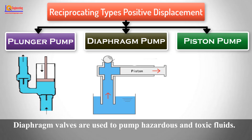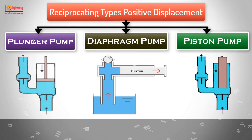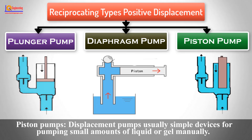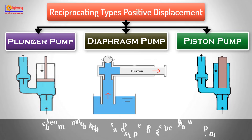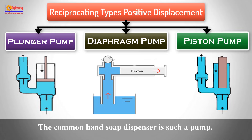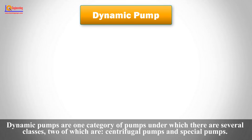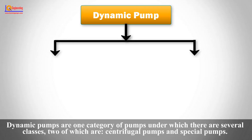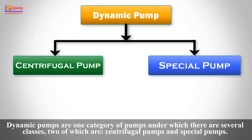Diaphragm valves are used to pump hazardous and toxic fluids. Piston pumps are displacement pumps, usually simple devices for pumping small amounts of liquid or gel manually — the common hand soap dispenser is such a pump. Dynamic pumps are one category of pumps, under which there are several classes, two of which are centrifugal pumps and special pumps.